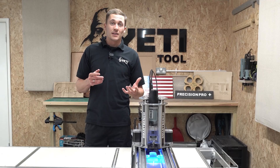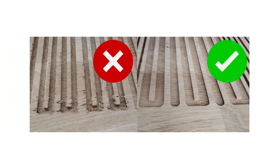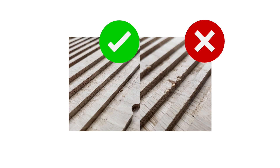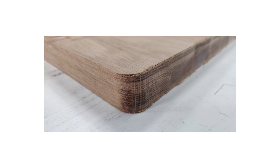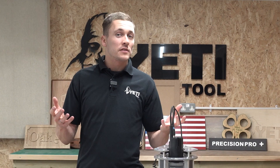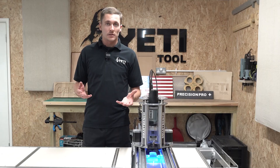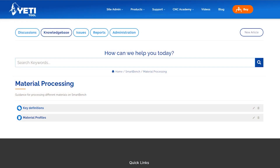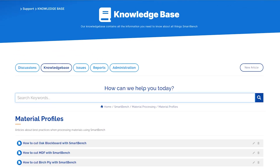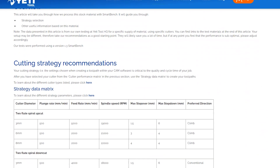Poor strategy can lead to all sorts of problems such as broken cutters, poor finish, inaccuracies, burnt materials, and damage to both your stock material and your spindle. We know it might seem daunting at first, but by the end of this video you'll understand that the underlying concepts are very simple. For the common materials we've already done the research on what values to enter, so please do check out our material profiles database on our knowledge base.